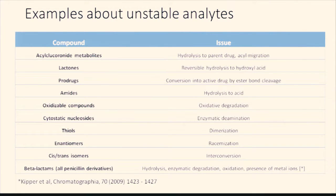Cytostatic nucleosides can degrade by enzymatic termination. Diols can degrade by dimerization. Enantiomers can form a racemate, and cis and trans isomers can interconvert over a time period.